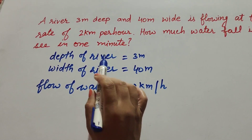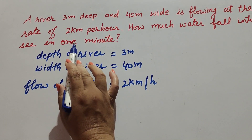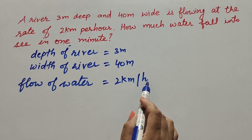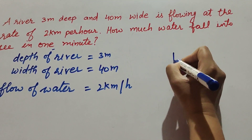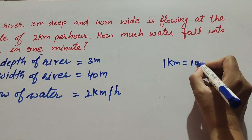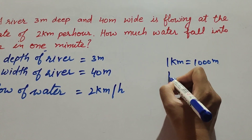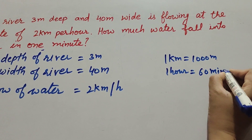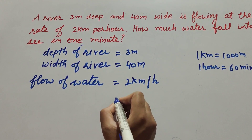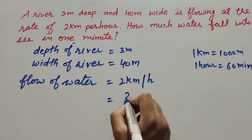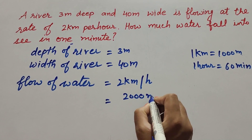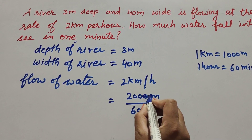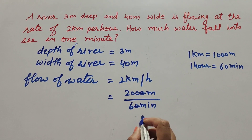We need to find the amount of water falling in one minute, but the rate is given in hours, so we change the units: kilometer to meter and hours to minutes. We know one kilometer equals one thousand meter and one hour equals 60 minutes. So 2 kilometers becomes 2000 meter, and we divide by 60 minutes, giving 2000/60 meter per minute.